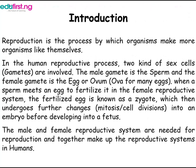Reproduction is the process by which organisms make more organisms like themselves. In the human reproductive process, two kinds of sex cells — gametes — are involved. The male gamete is a sperm and the female gamete is the egg or ovum. When a sperm meets an egg to fertilize it in the female reproductive system,